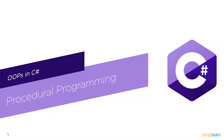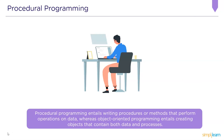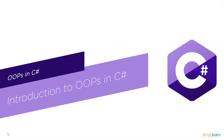Let's start with understanding procedural programming. Procedural programming entails writing procedures or methods that perform operations on data, whereas object-oriented programming entails creating objects that contain both data and methods and encapsulate them together in one single object or class. A best example of procedural programming would be the C programming language. Now let us understand what object-oriented programming is.